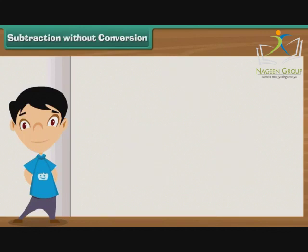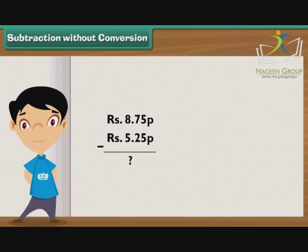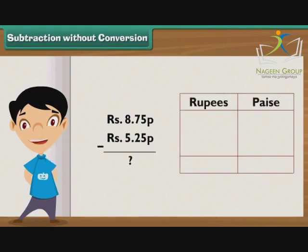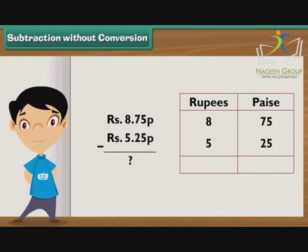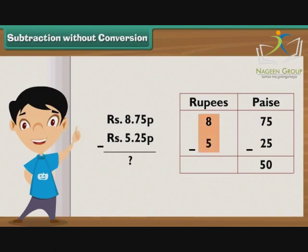Subtraction without conversion. Let's learn how to subtract 5 rupees 25 paise from 8 rupees 75 paise. Write 8 rupees 75 paise as Rupees 8.75 P, then write 5 rupees 25 paise as Rupees 5.25 P under it, so that the rupee part falls in the rupee column and the paise part falls in the paise column. Subtract 25 from 75 to get 50 — write 50 in the paise column. Subtract 5 from 8 to get 3 — write 3 in the rupee column. So the answer is 3 rupees 50 paise.